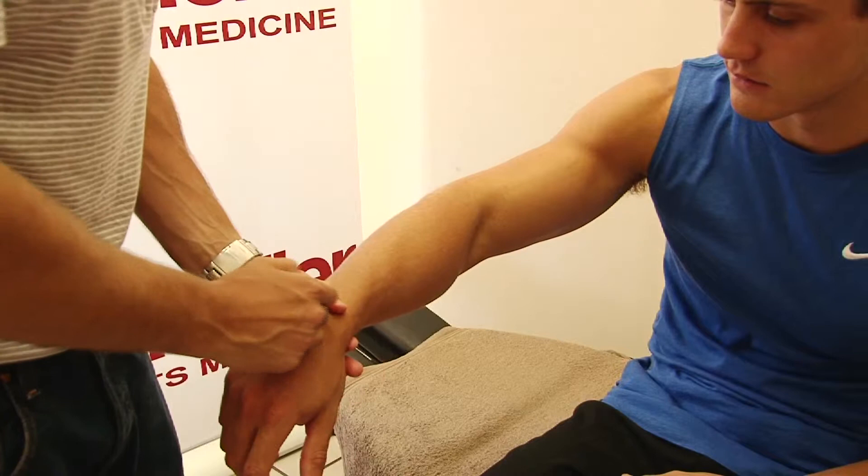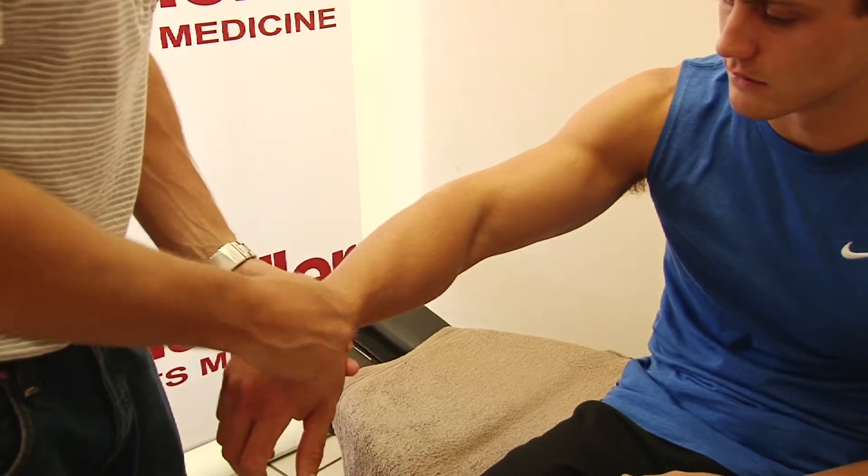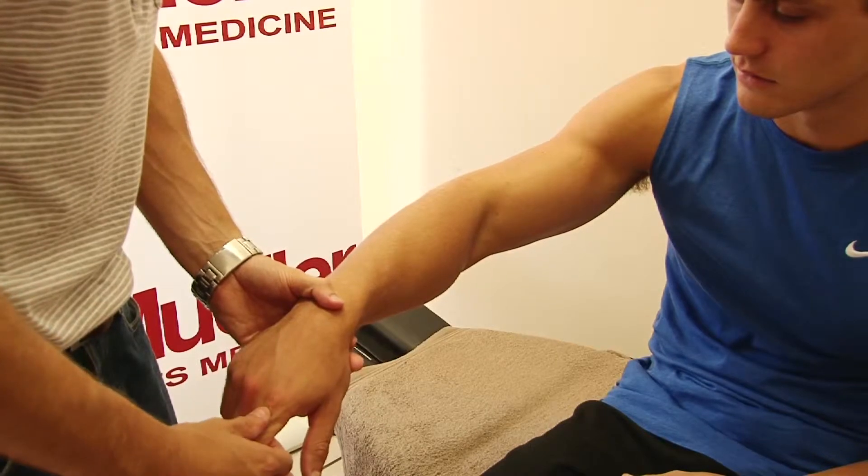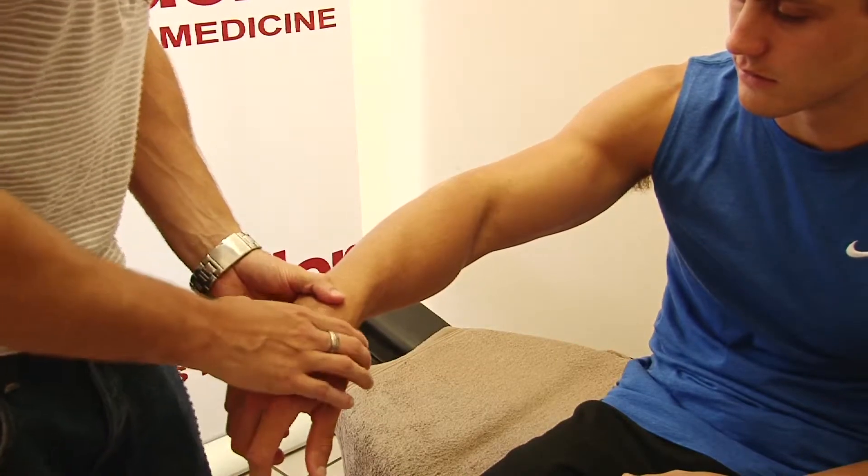You're going to have your first row of carpal bones and your second row of carpals, then your metacarpals, and then your phalanges which form your different joints. So basically you just want to check the range of movement.